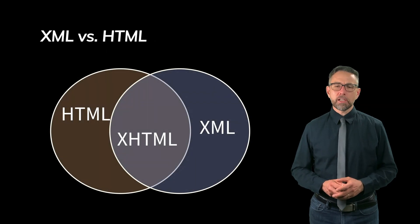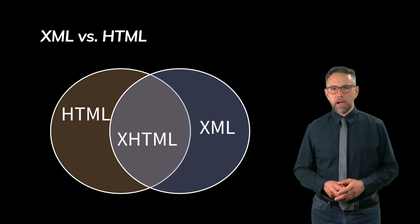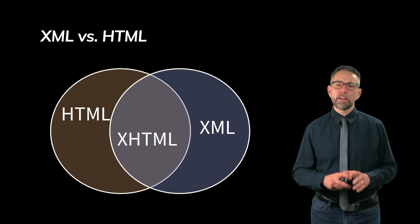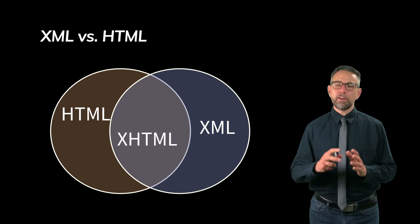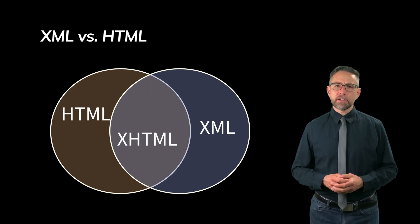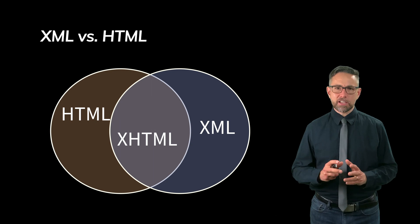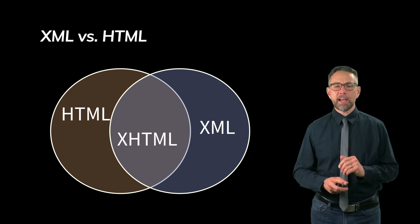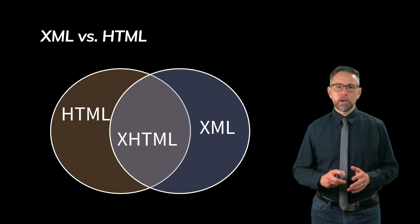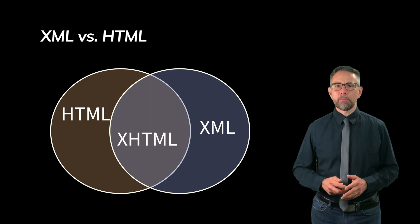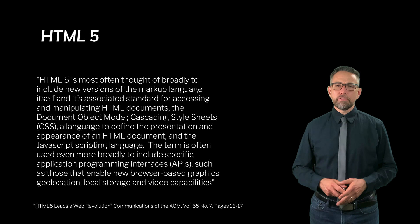If you look at them visually, there are some files that are HTML, some that are XML, and some that are both — those are XHTML files. There are examples of things that can be either HTML or XML but not both. So fundamentally, HTML5 and pure XML remain distinct, with XHTML sitting at the intersection.